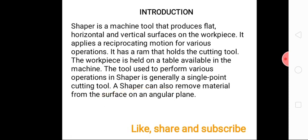First, what is the definition of the shaper machine? A shaper machine is a machine that produces flat surfaces on a workpiece, both horizontally and vertically. In the shaper machine, the workpiece is stationary and the tool is movable. There is a reciprocating action of the ram.